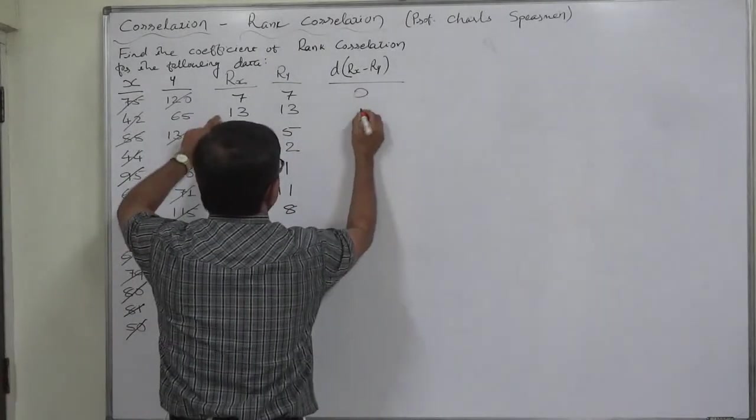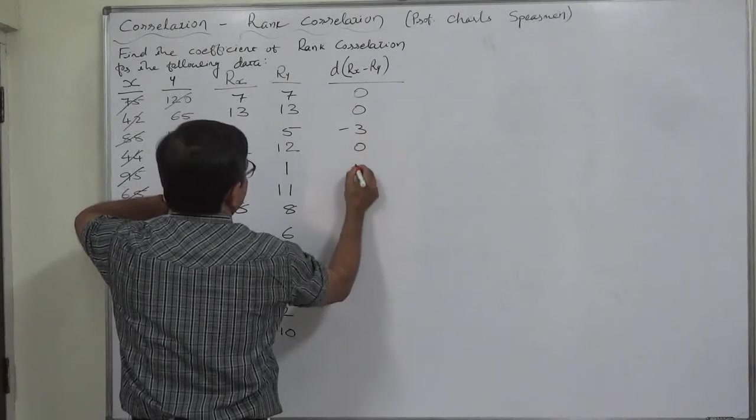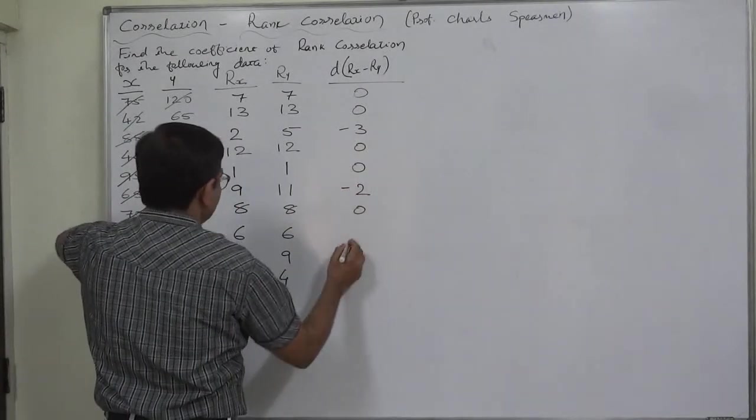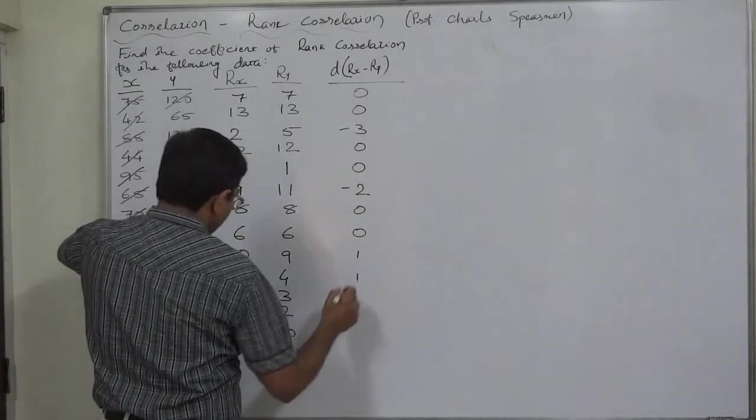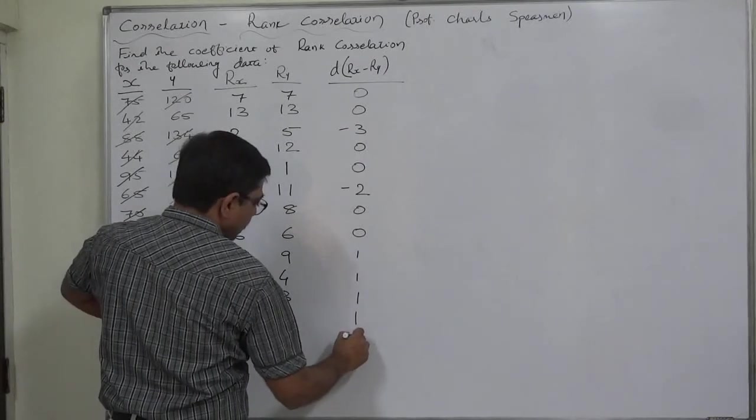7 minus 7, 0. 13 minus 13, 0. 2 minus 5, minus 3. 12 minus 12, 0. 1 minus 1, 0. 9 minus 11, minus 2. 8 minus 8, 0. 6 minus 6, 0. 10 minus 9, positive 1. 5 minus 4, again 1. 4 minus 3, 1. 3 minus 2, 1. 11 minus 10, 1.